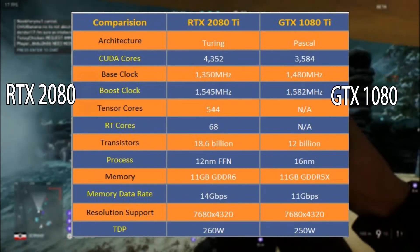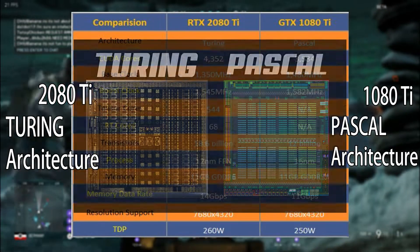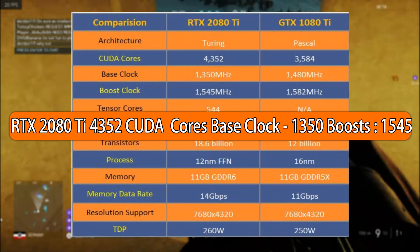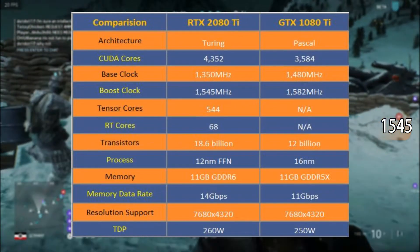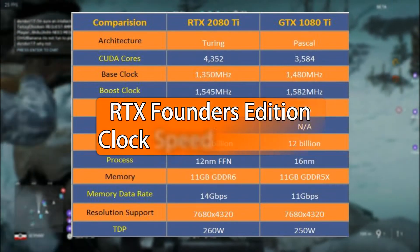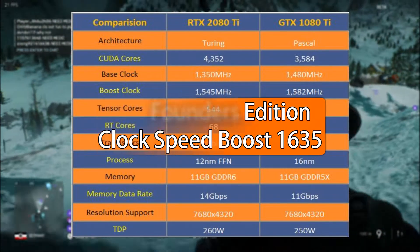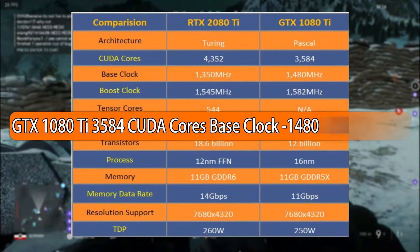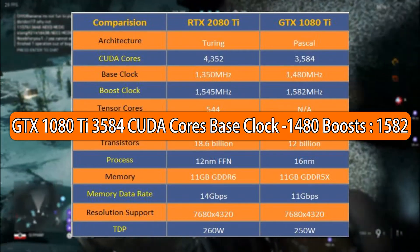The RTX model is based on Turing architecture and the 1080 Ti is on Pascal architecture. The RTX 2080 Ti has 4352 CUDA cores with a base clock speed of 1350 MHz, which can boost up to 1545 MHz. The Founder's Edition, which is an overclocked version, can boost up to 1635 MHz — nearly 90 MHz more than the non-overclocked version. The 1080 Ti has 3584 CUDA cores with a base clock of 1480 MHz, which can boost up to 1582 MHz.